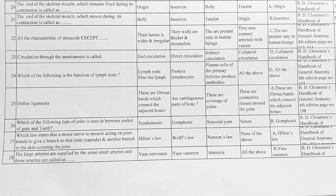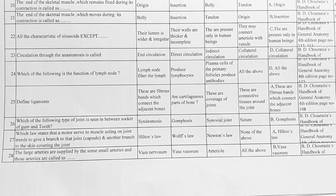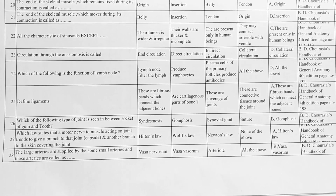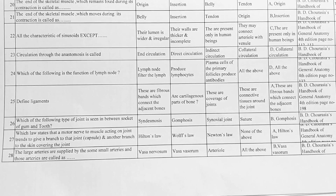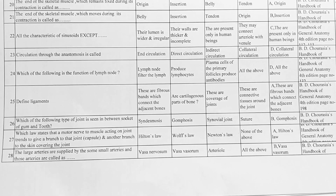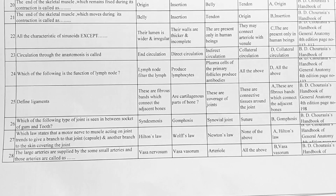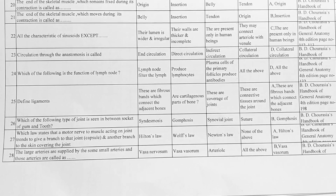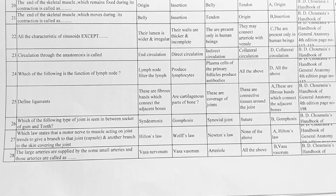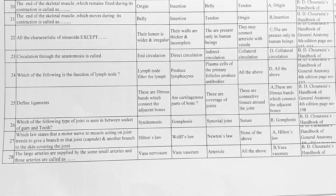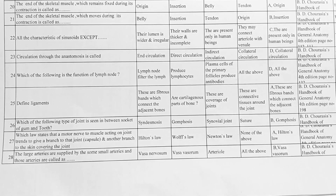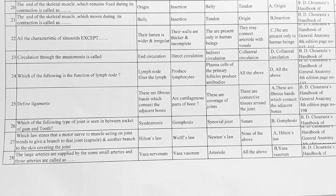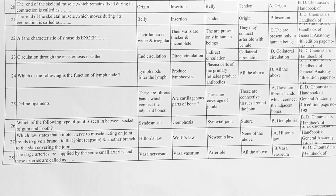Next, the large arteries are supplied by some small arteries, and those arteries are called — options: A. vasa nervorum, B. vasa vasorum, C. arteriole, D. all of the above. Option B is correct, vasa vasorum.